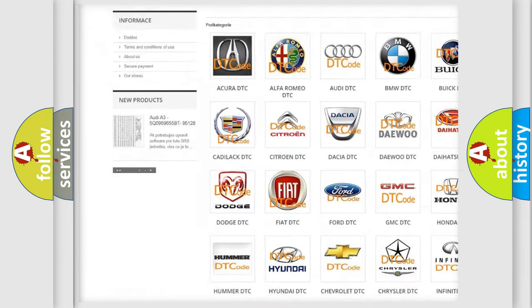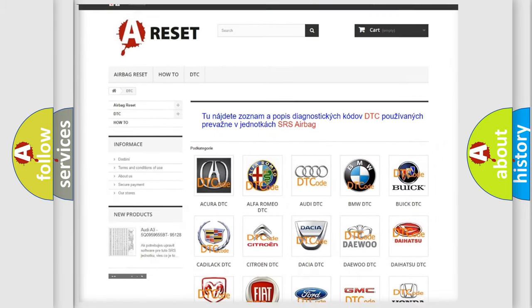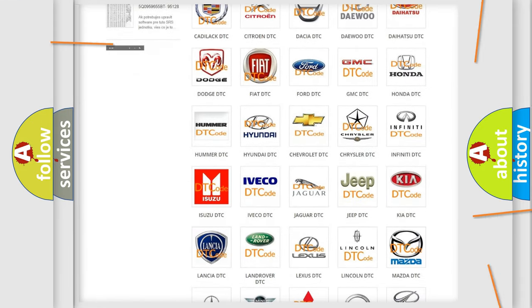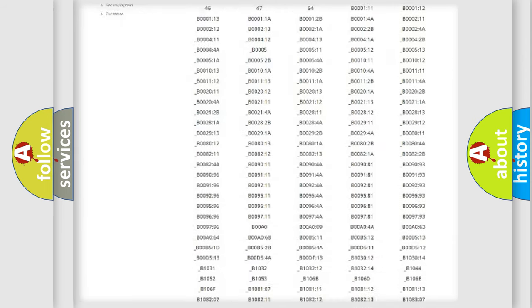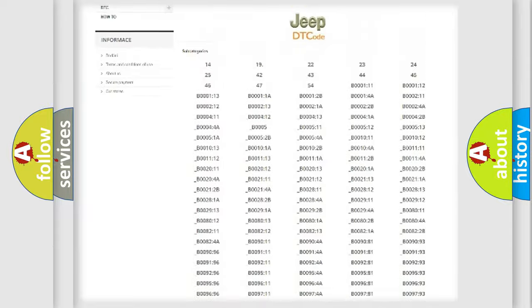Our website airbagreset.sk produces useful videos for you. You do not have to go through the OBD2 protocol anymore to know how to troubleshoot any car breakdown. You will find all the diagnostic codes that can be diagnosed in Jeep vehicles.